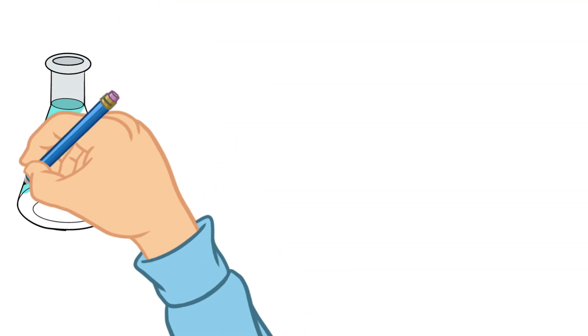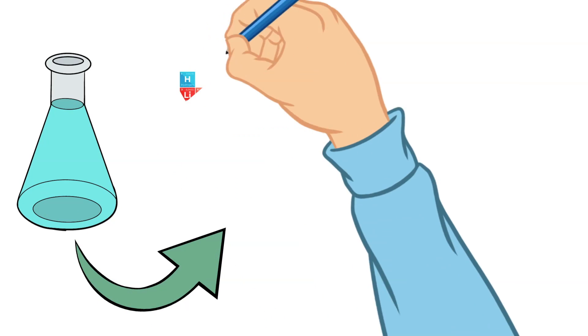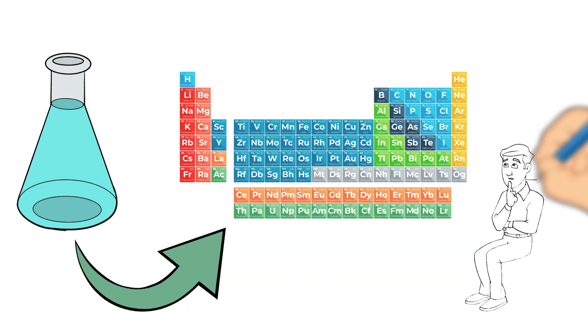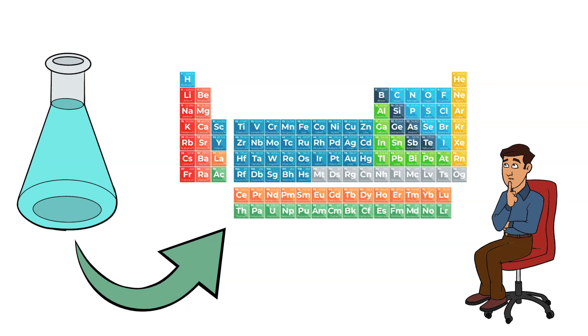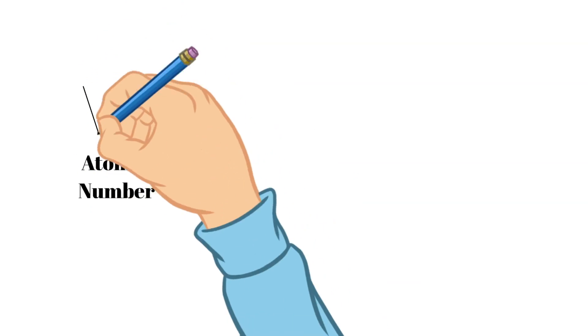Without further ado, let's start doodling. To understand chemistry, we must define what the different things on the periodic table mean. And to do that today we will be talking about the atomic number.